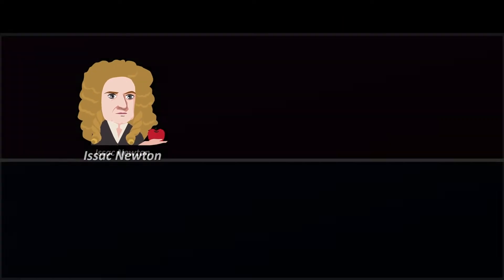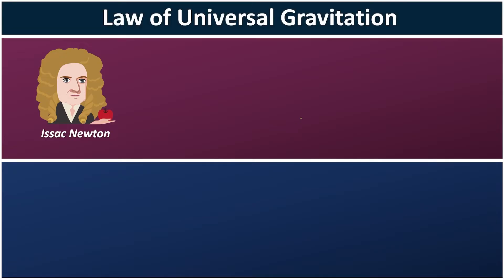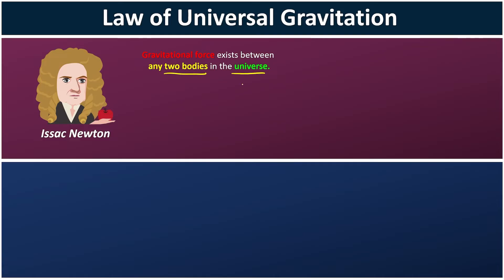Since then, he proposed the law of universal gravitation. He stated that gravitational force not only exists between the apple and the earth, but it exists between any two bodies in our universe.